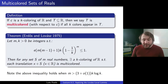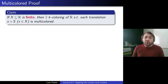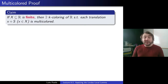So how are we going to prove that such nice colorings of the reals exist where every possible translation is multicolored? We'll do the trick where we look at finite sets first. Our first claim is that if instead we're only interested in a finite set of translations — we'll call this X — we claim that there exists a k-coloring of R such that each translation x + S, where x is in X, is multicolored.